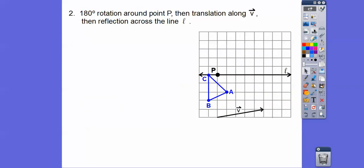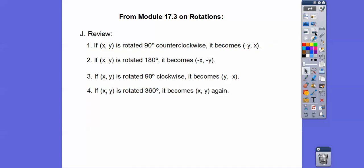Let's try this next one. We're going to do a 180-degree rotation around the point P, then translate it along vector V, and then reflect it over the line L. The 180-degree rotation came from module 17.3 — let's review that quickly.